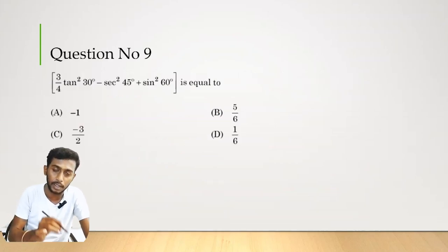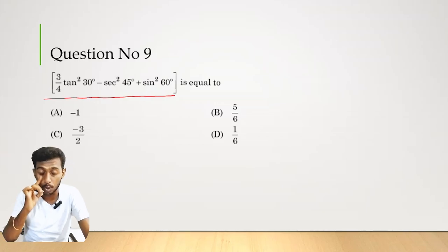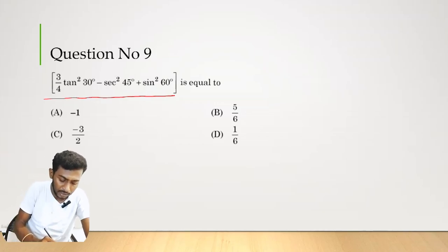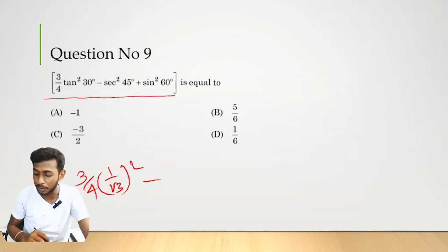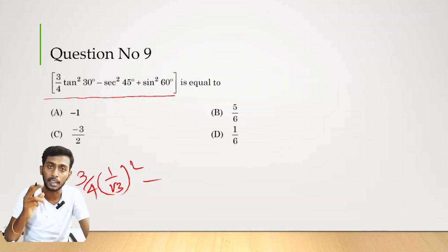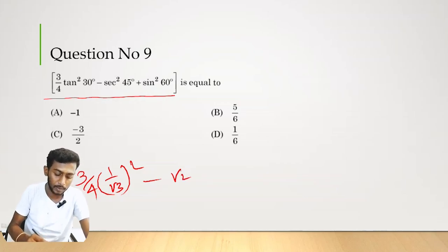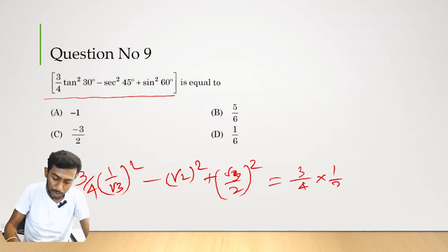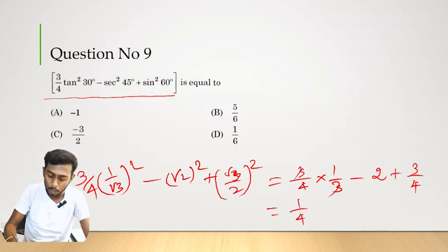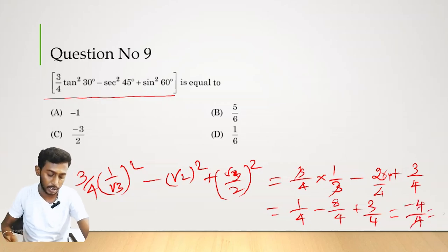Question number 9. Find (3/4) tan²30° − sec²45° + sin²60°. Substituting values: tan 30° = 1/√3, sec 45° = √2, sin 60° = √3/2. So (3/4)(1/3) − 2 + 3/4 = 1/4 − 2 + 3/4 = 4/4 − 8/4 = −4/4 = −1. Therefore option A is the correct answer.